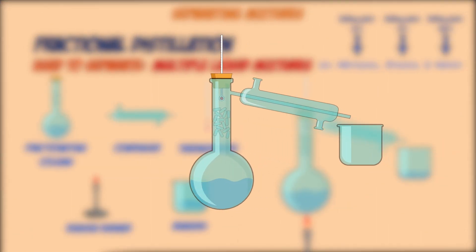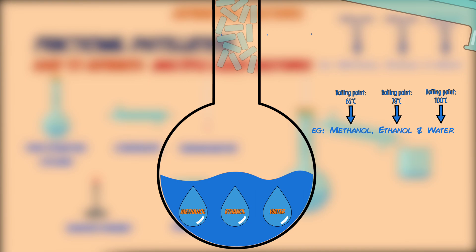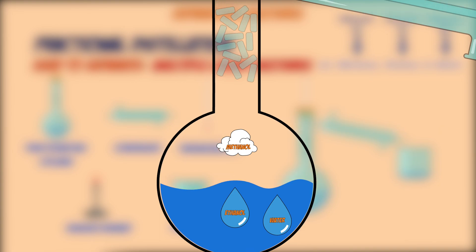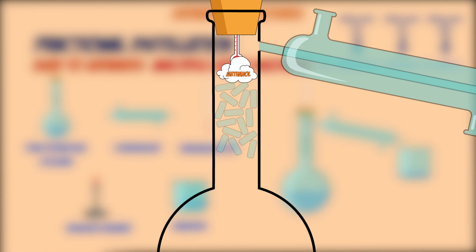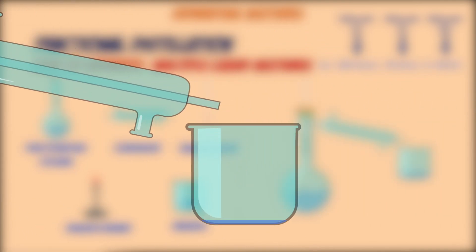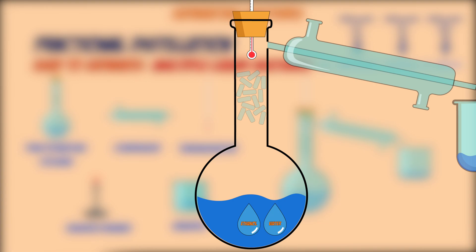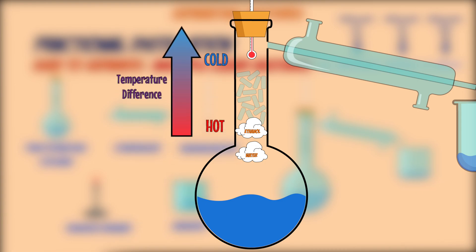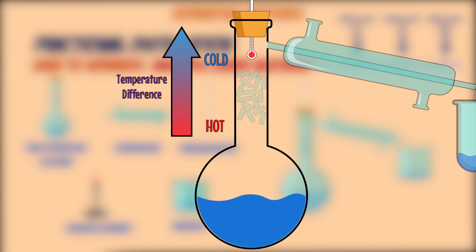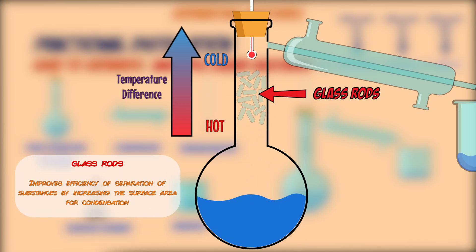Just like in simple distillation, the mixture is heated to boil the liquid with the lowest boiling point — methanol in this case. This causes methanol to boil into gas whilst leaving ethanol and water in liquid form. Methanol flows up the fractionating column, through the condenser, and is collected as a liquid in a beaker. Sometimes small amounts of water and ethanol can evaporate too, but the cooler top of the fractionating column means these condense back into the boiling flask and are not separated out.